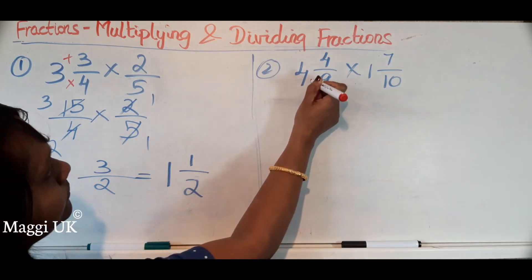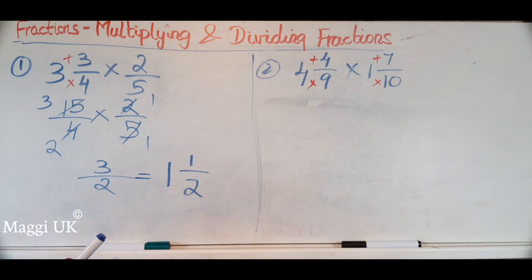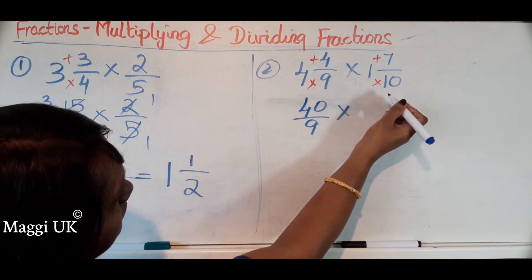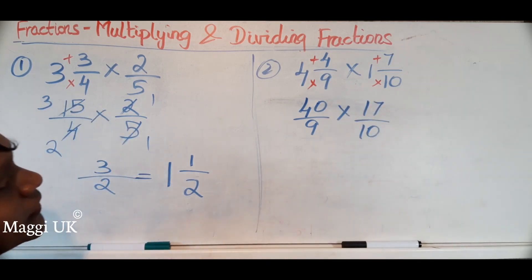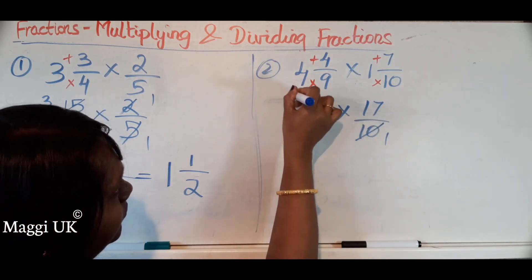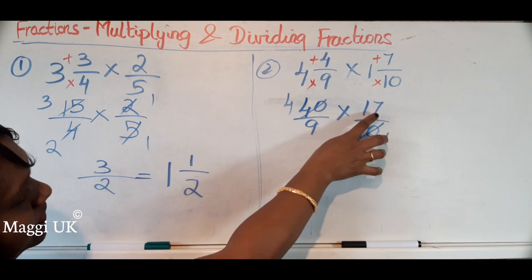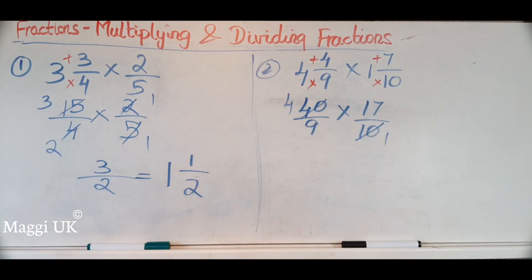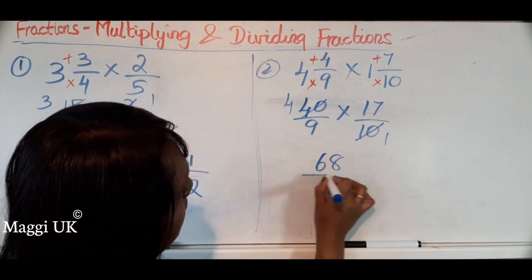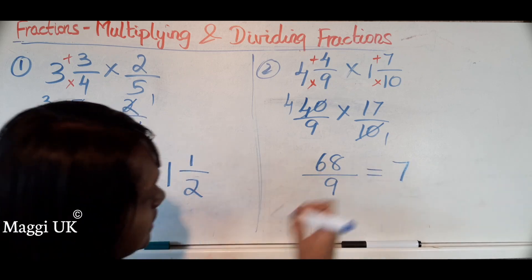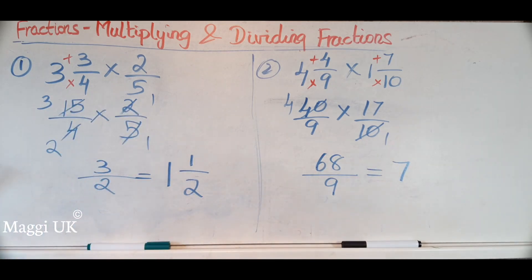Ravi, can you do this one? First, convert the mixed number: 10 plus 7 is 17, so that's 17 over 10. Then cross-multiply: 10 and 40 — 10 goes into 40 four times. Now multiply: 4 times 17 is 68. Since we can't simplify further, the answer is 68 over 9. To convert to a mixed number: 9 goes into 68 seven times — 9 times 7 is 63 — and the remainder is 5. So the answer is 7 and 5 over 9. Excellent, Ravi!